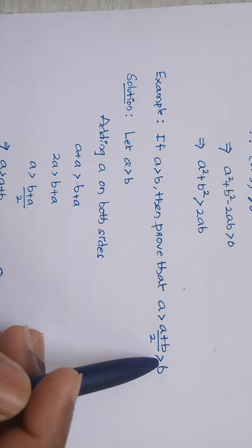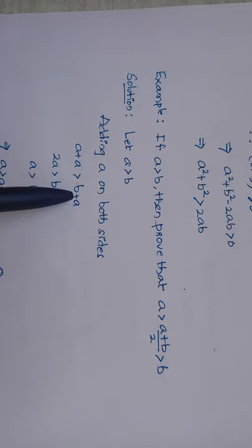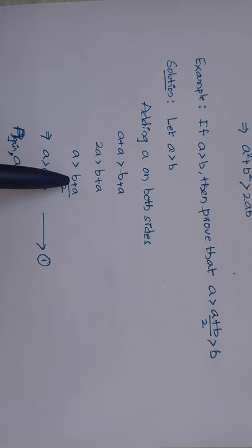Solution: let a > b. Adding a on both sides, we get a + a > b + a, so 2a > b + a. After dividing by 2 on both sides, we get a > (a+b)/2. I take this as equation number 1.